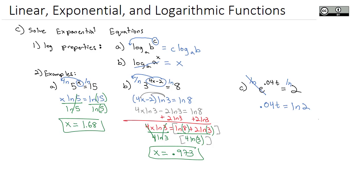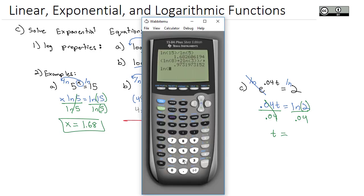That's that second log property that we wrote up above. Now to get the t alone, I just have to divide by 0.04 on both sides, and t is equal to the natural log of 2 divided by 0.04. Just make sure that natural log of 2 is in parentheses. We'll do natural log of 2 divided by 0.04, and we find out our t is 17.33.